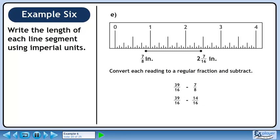Get a common denominator. Subtract the fractions to get 25 over 16. As the mixed number, this is 1 and 9 sixteenths of an inch.